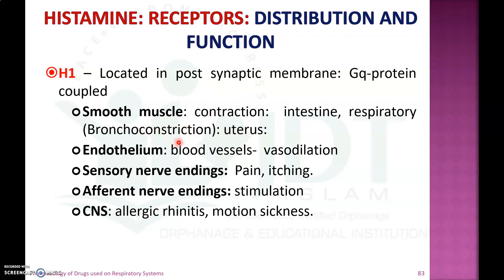H1 receptor activation is very important in the respiratory system. In any hypersensitivity reaction, histamine release produces bronchoconstriction. In blood vessels, it produces vasodilation. H1 receptors at sensory nerve endings produce pain and itching, and stimulate afferent nerve endings. In the CNS, H1 receptor activation is associated with allergic rhinitis and motion sickness.